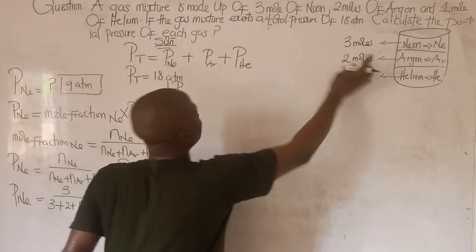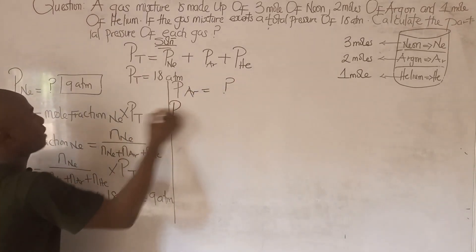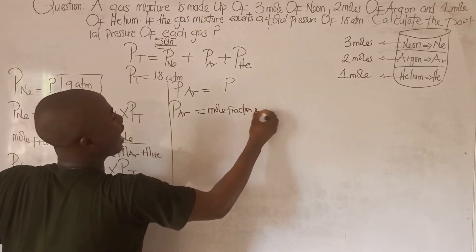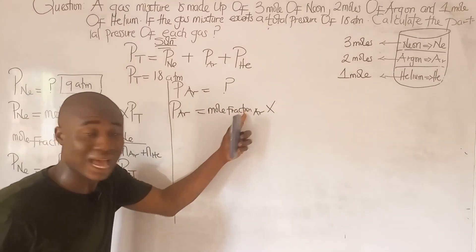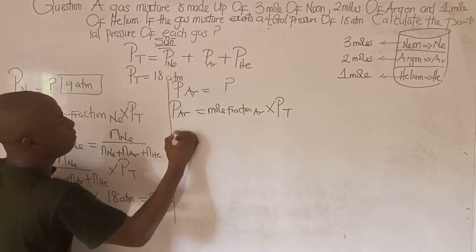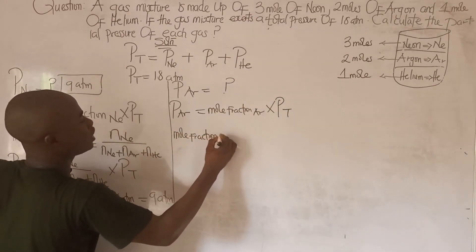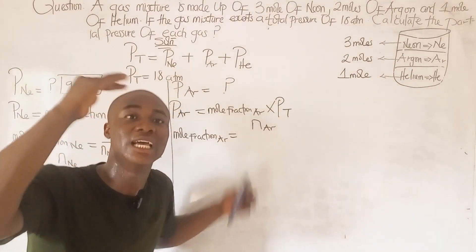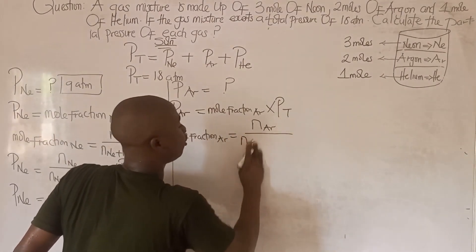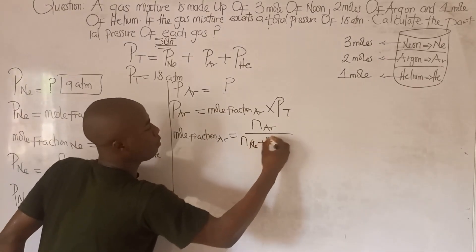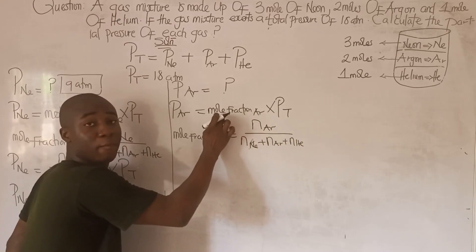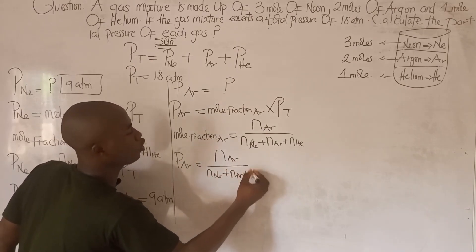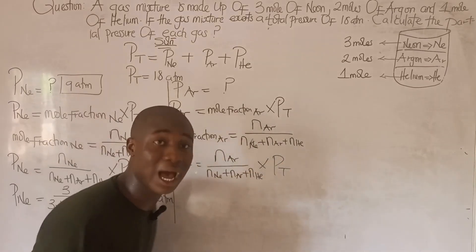Partial pressure of Argon equals mole fraction of Argon times P_t. The mole fraction of Argon equals number of moles of Argon over the summation of all moles: number of moles of Neon plus Argon plus Helium. Substituting: partial pressure of Argon equals number of moles of Argon over (n_Ne + n_Ar + n_He), times P_t. Inputting values: 2 over (3 + 2 + 1), times 18 atm. That is 6 atm.